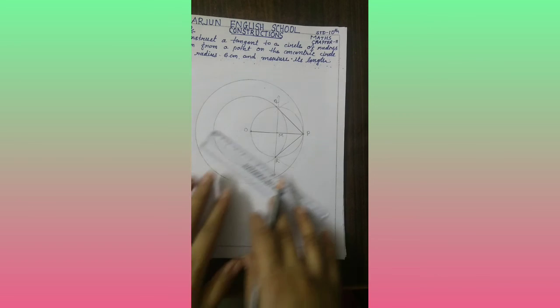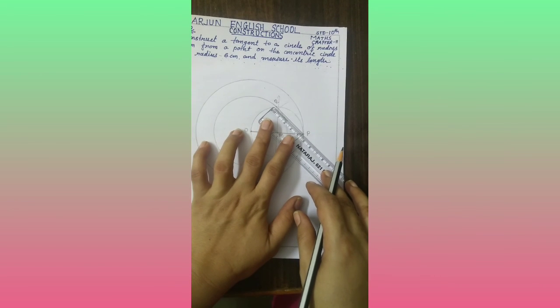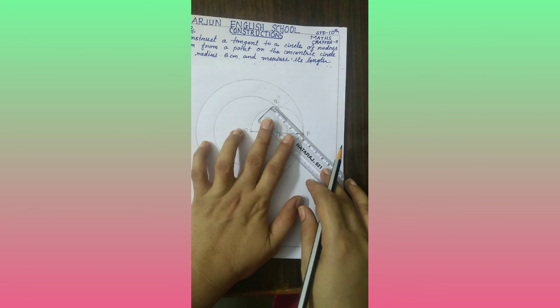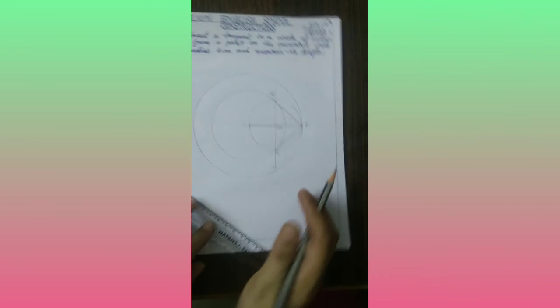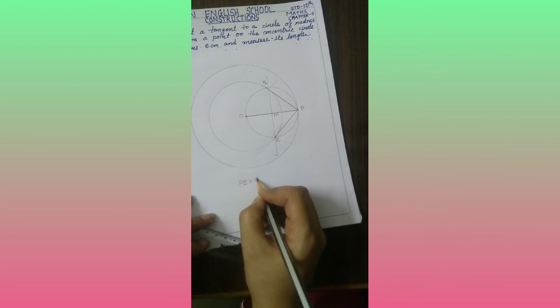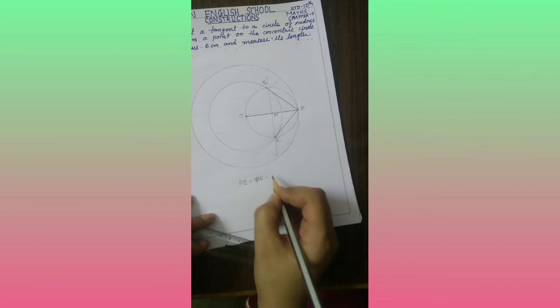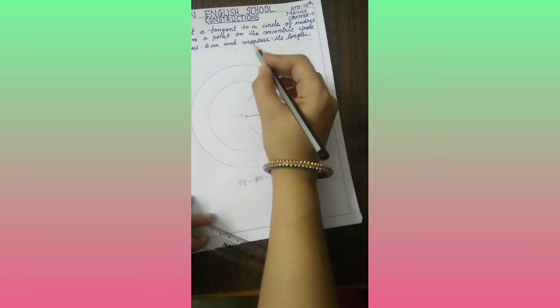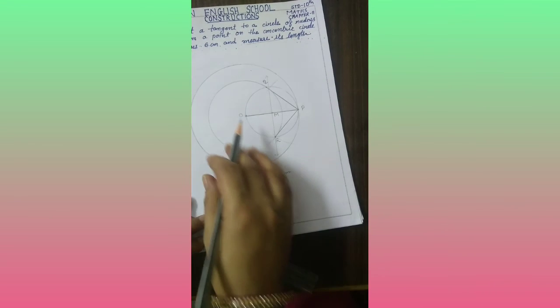Now PQ and PR are of same measure. And here we can see PQ is equal to PR is equal to 4.5 cm. So we measure its length.